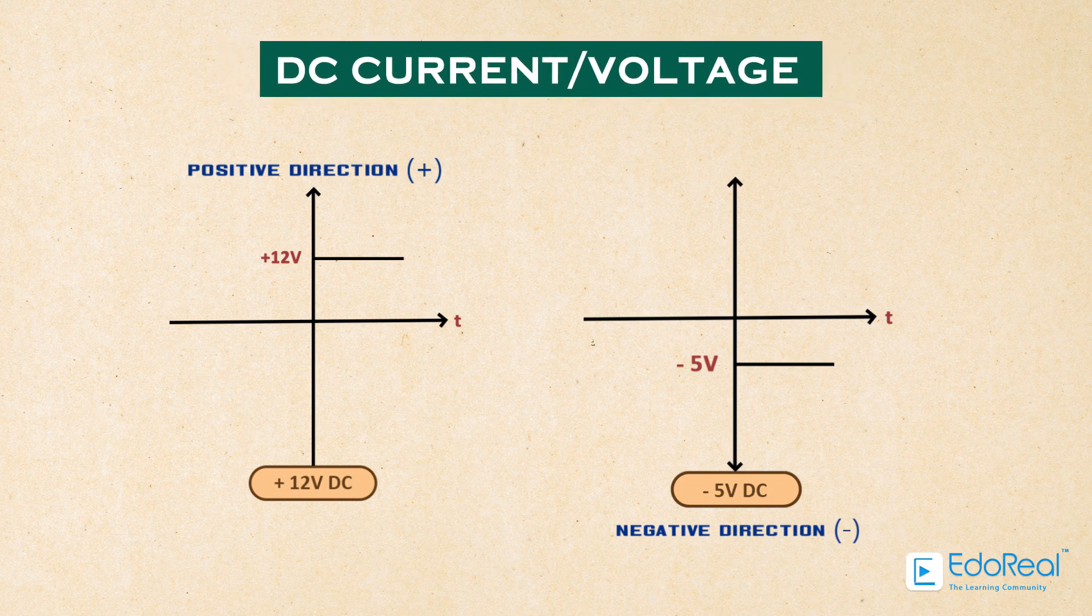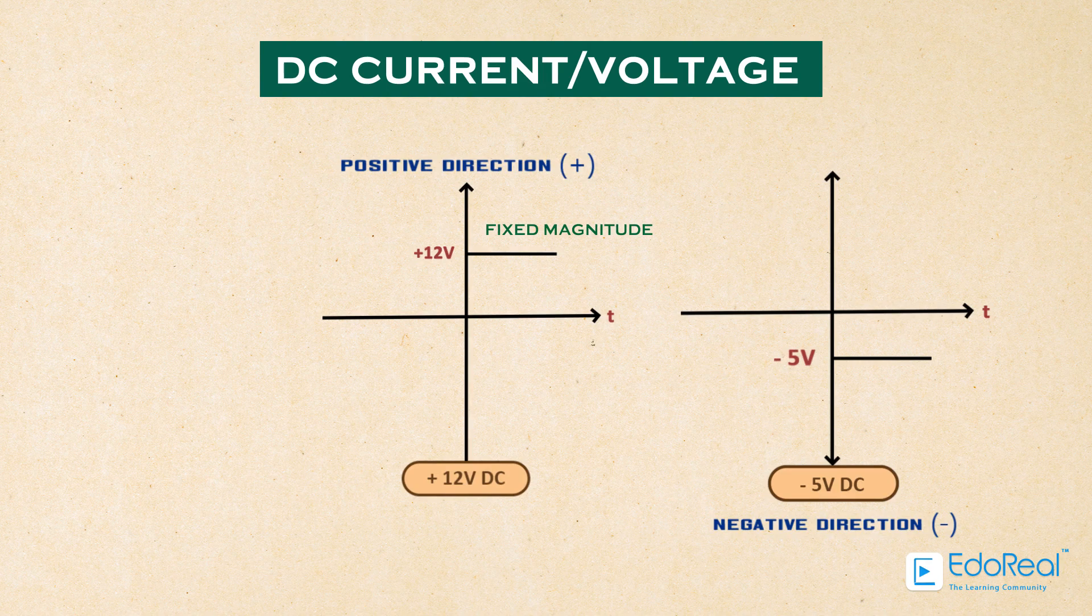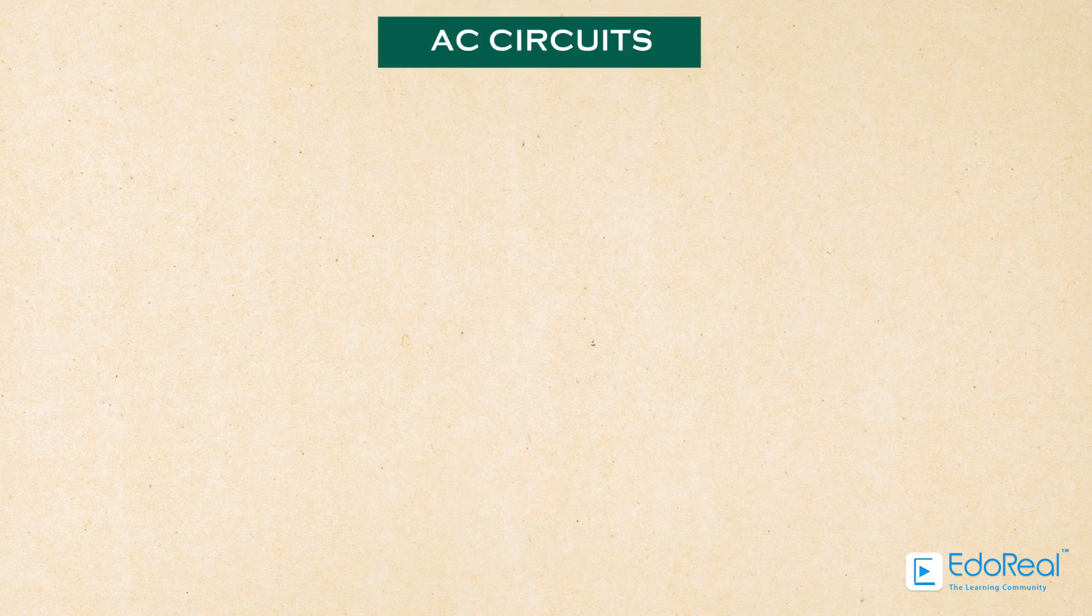The DC voltage or current has a fixed magnitude, that is amplitude, and a definite direction associated with it. AC circuits use alternating current (AC).